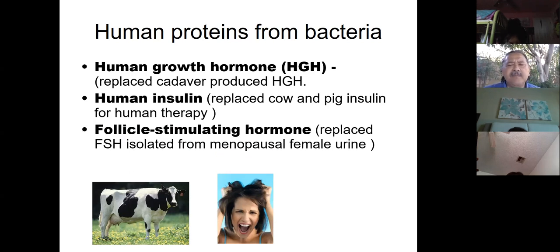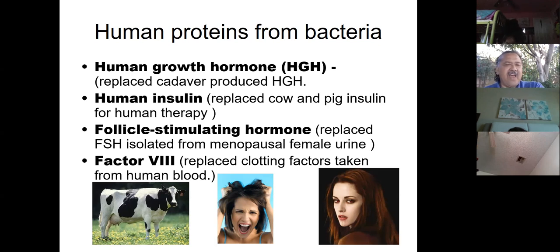Here's another one called follicle stimulating hormone. Follicle stimulating hormone is one of the hormones that's involved in the menstrual cycle and in childbirth. So you can see here it says we used to get this from the urine of older females, menopausal females. So you can imagine, I mean, how many menopausal females are going to be around and be willing to give up some urine to make some follicle stimulating hormone. And it's got to be an incredible amount. So now we can make it much more easily. And then blood factors like factor VIII, clotting factors, replace clotting factors taken from human blood. So there you go. These are some human proteins that we make from genetic engineering.